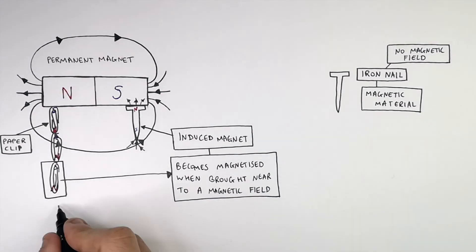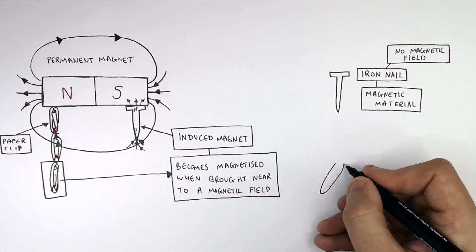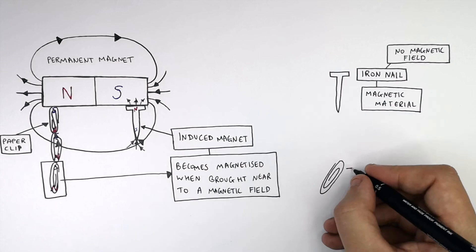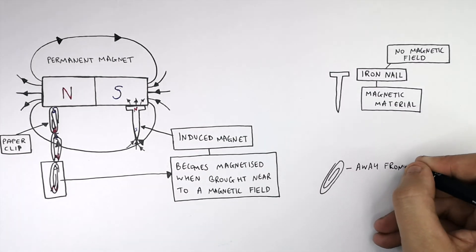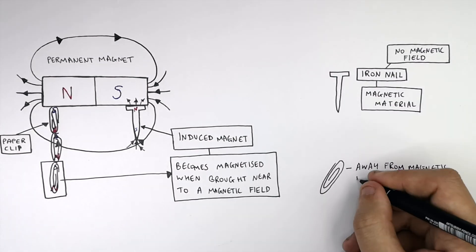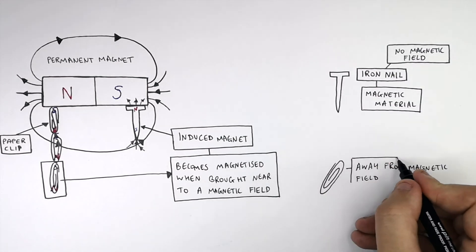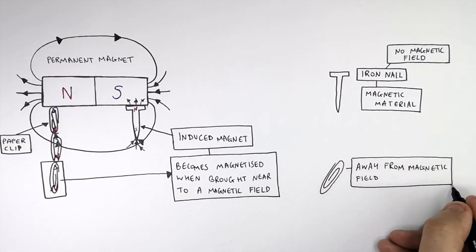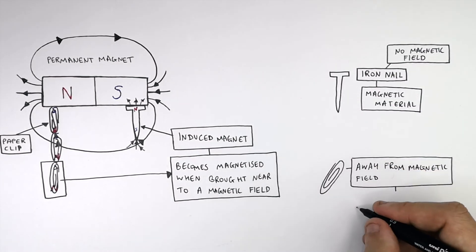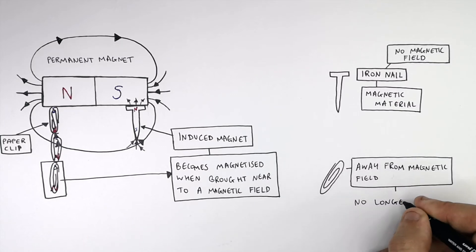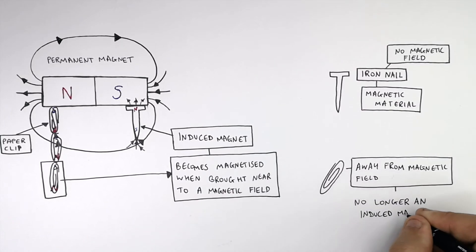And if we remove this paper clip away from the magnetic field of the paper clip above it, it no longer has magnetic properties because it is no longer an induced magnet.